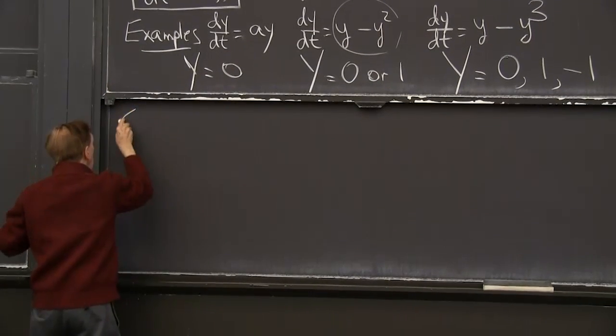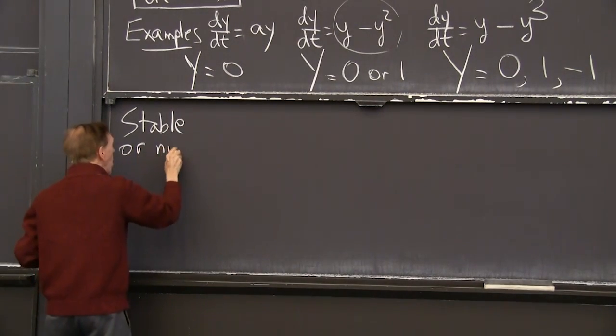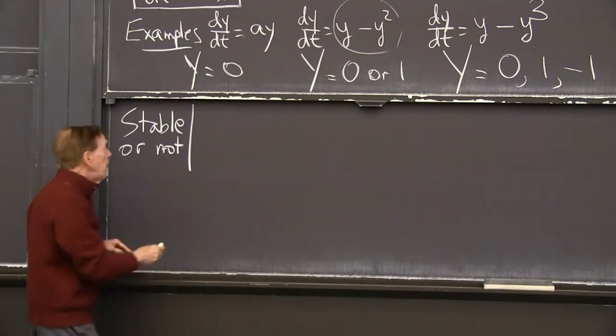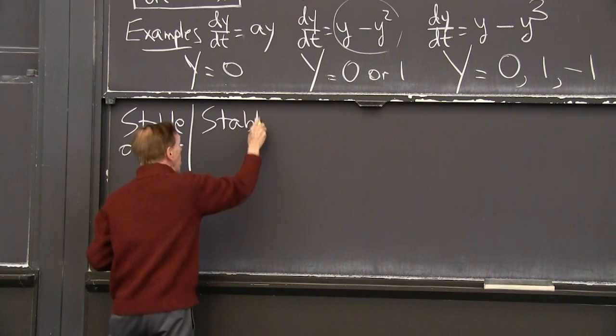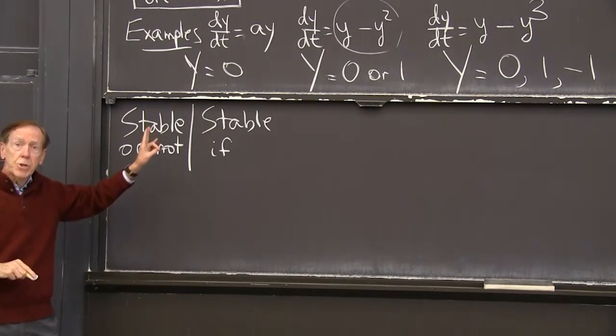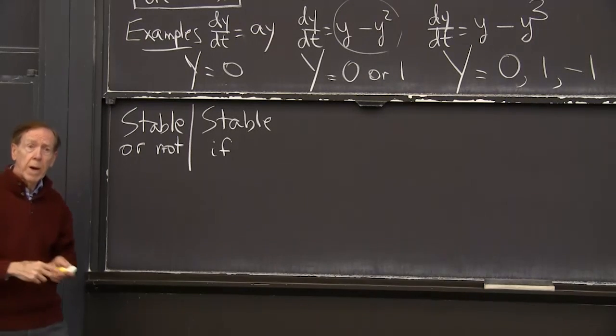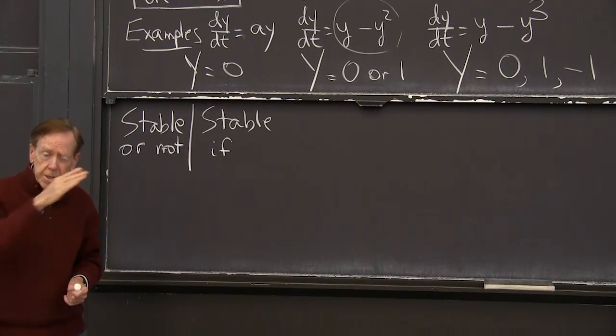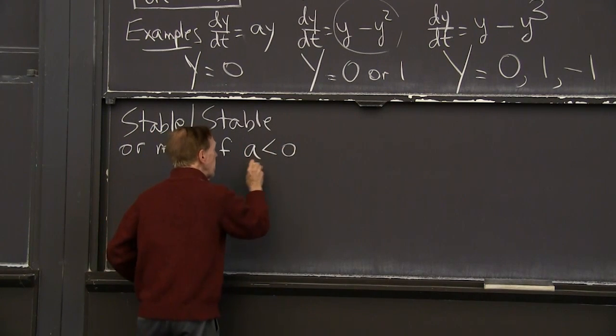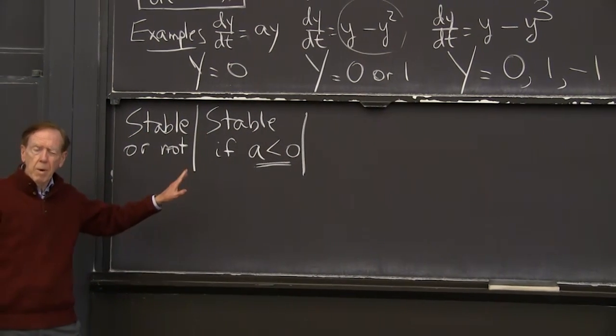So in the linear case, when does the solution stay near 0? If I start small, when do I go to 0? And when do I leave? OK. So I'm ready for the answer here. So stable or not? OK. In this example, Y equals 0. That's stable if, well, do you see what's coming? The solution is e to the at, or constant times e to the at. When does that go to 0? When does it approach the steady state? I need a to be negative. That's going to be the key to everything. That number a should be negative.